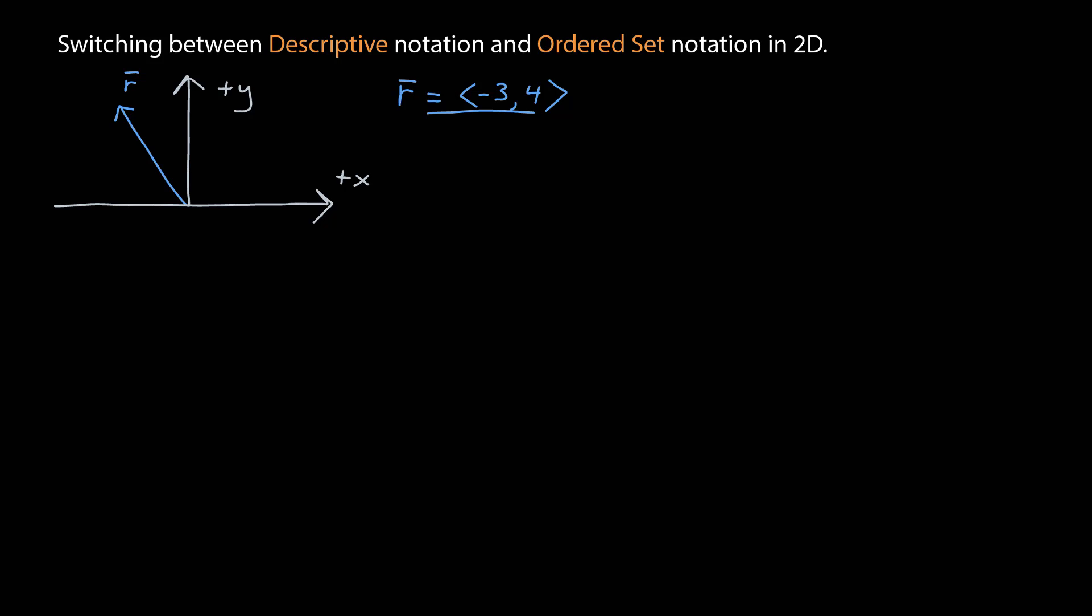I have a vector here given in ordered set notation. Since its tail is at the origin, that means the tip has the coordinates of x equals negative 3 and y is equal to 4.